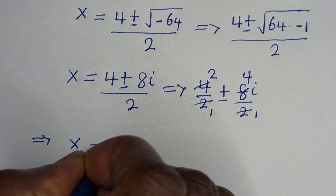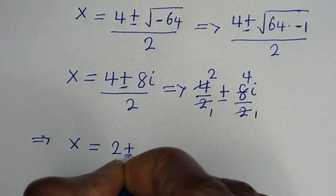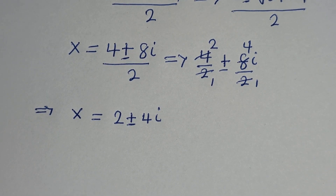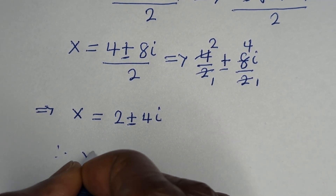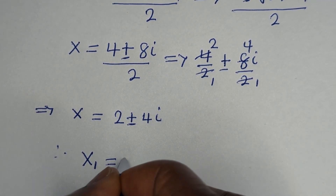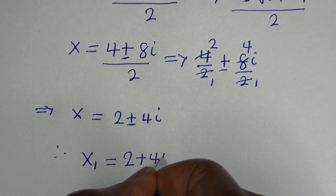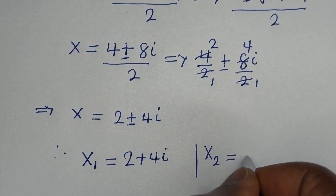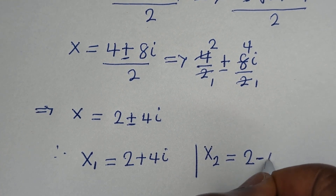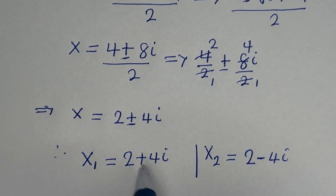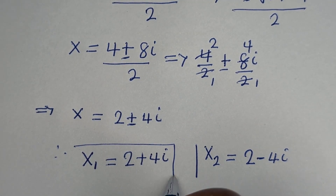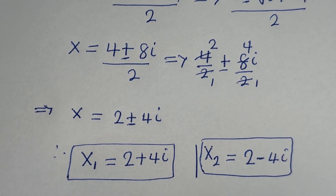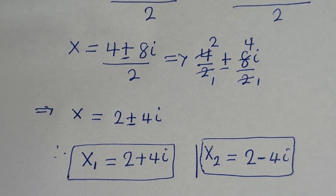So x is equal to 2 plus or minus 4i. Therefore, x1 is equal to 2 plus 4i, and x2 is equal to 2 minus 4i. We have got the values of x1 and x2. Let us now solve for y1 and y2.